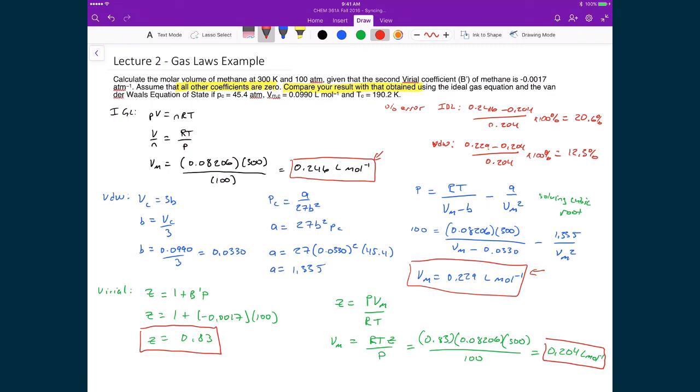In my percent error calculation, whenever you do any of these, you always do whatever you measured minus whatever you take to be the exact value. And so in this case, because the virial equation of state is supposed to give an empirically exact value, then that's why I'm choosing to compare directly to the value calculated from the virial coefficients. And so again, what this tells us is that both the ideal gas law and the van der Waal equation of state don't completely accurately reflect reality.